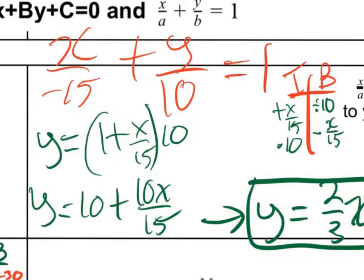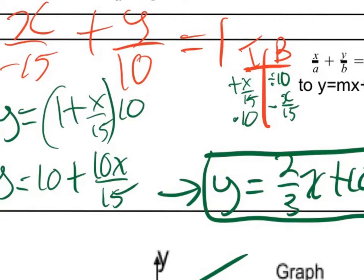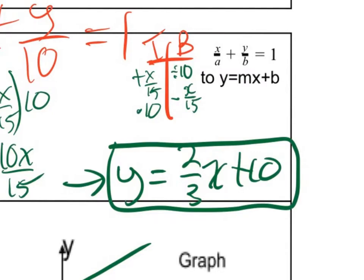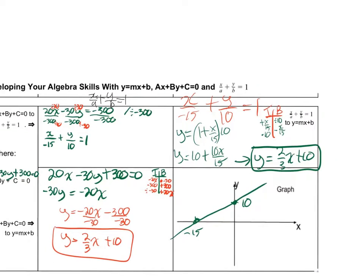And then that simplifies to, well, 10 over 15 simplifies to 2 thirds. And then I put it in y equals mx plus b form, which is 2 thirds x plus 10. Which does make a lot of sense because if I look at this, I've got, there's a y-intercept of 10 there. And I had a y-intercept in this form of y over 10 as well.